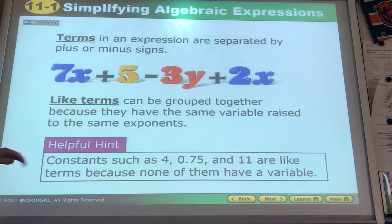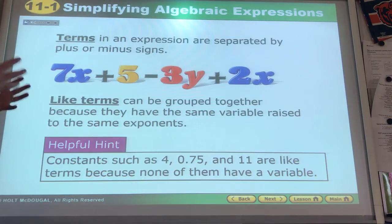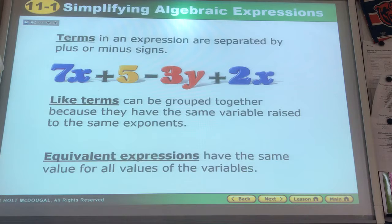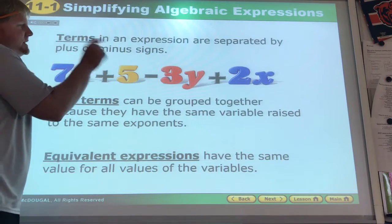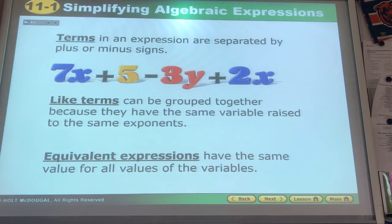Now constants, before the term, because none of them have a variable. So if there was 5 and like an 11 over there, we could add those because they would be like terms, neither one having a variable. Equivalent expressions have the same value for all values of the variable. X is going to be the same in all situations. Y is going to be the same in all situations in the one problem.